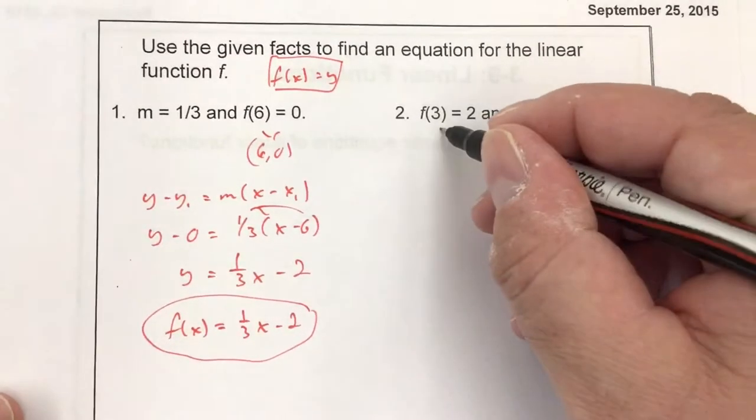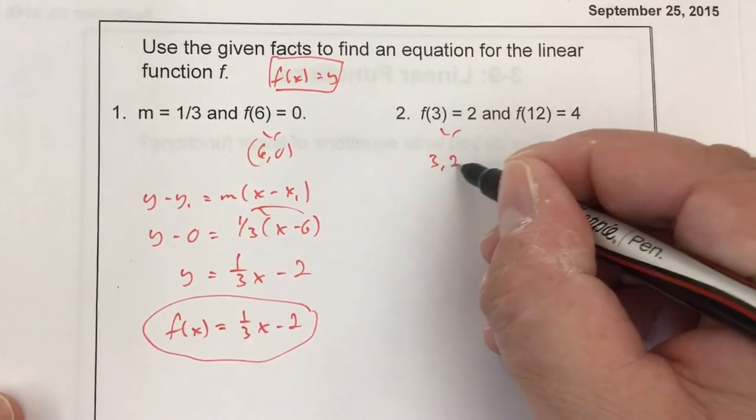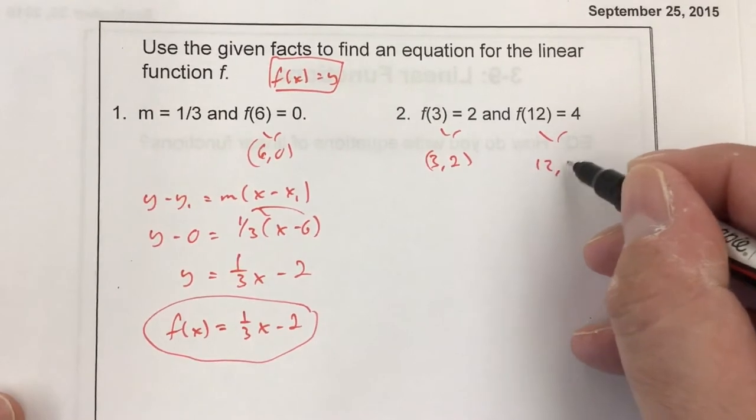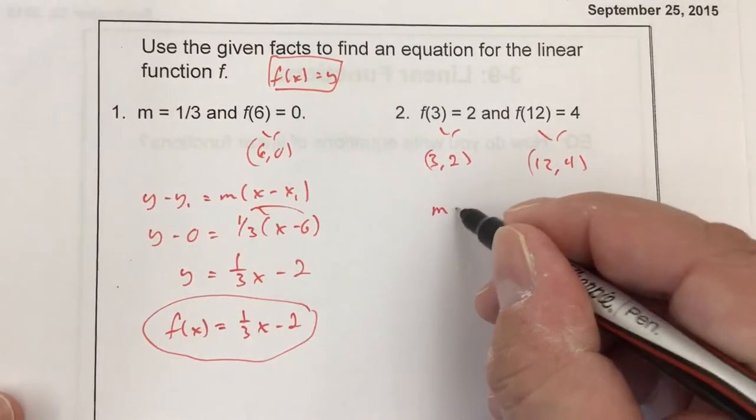The second problem, we have two values. f(3) equals 2, so one ordered pair is (3, 2). Since f(12) equals 4, we get (12, 4). Now I have to find a slope.